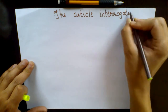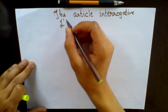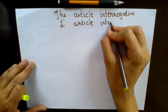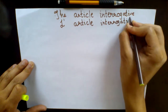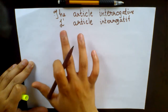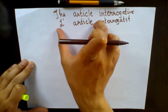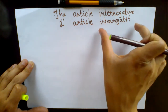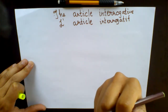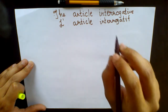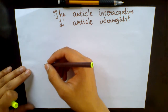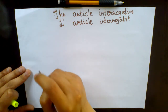The interrogative article is known as 'l'article interrogatif' in French. It is the definite article joined together to form 'l'article interrogatif.' I taught you this in the definite article lesson — if you forgot, make sure you go back to the previous lesson. If you're new, make sure you go and revise the definite and indefinite articles in French.